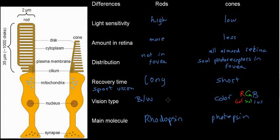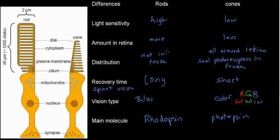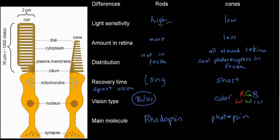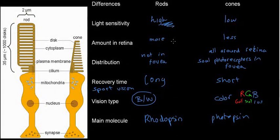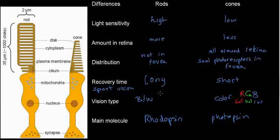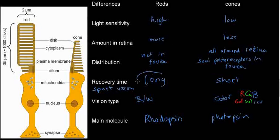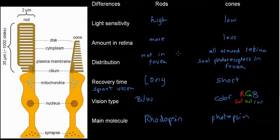Rods are used basically in low, dim conditions because they're very sensitive — even one photon excites them. But with a very long recovery time, many photons will saturate them.